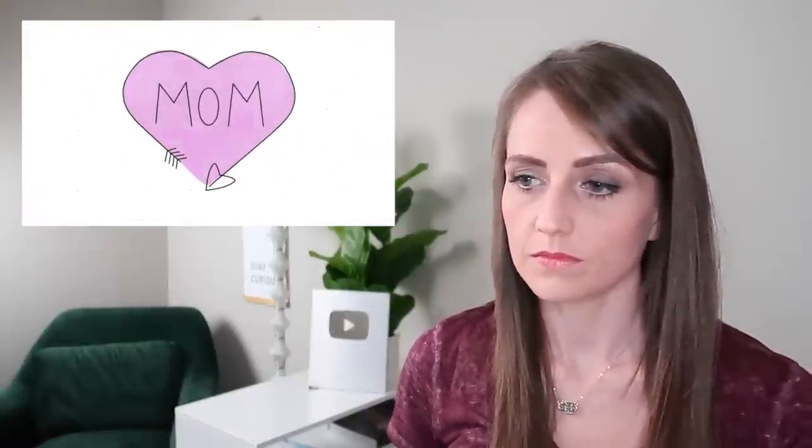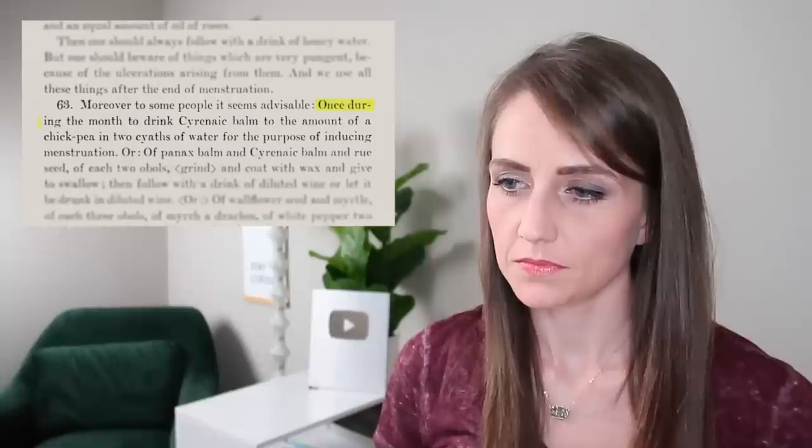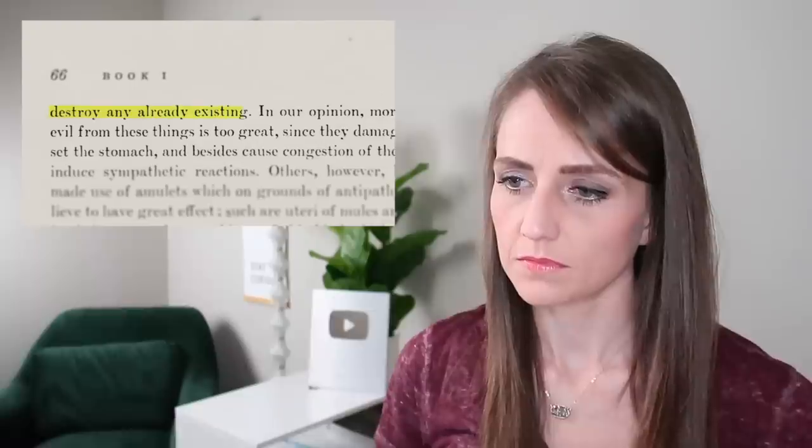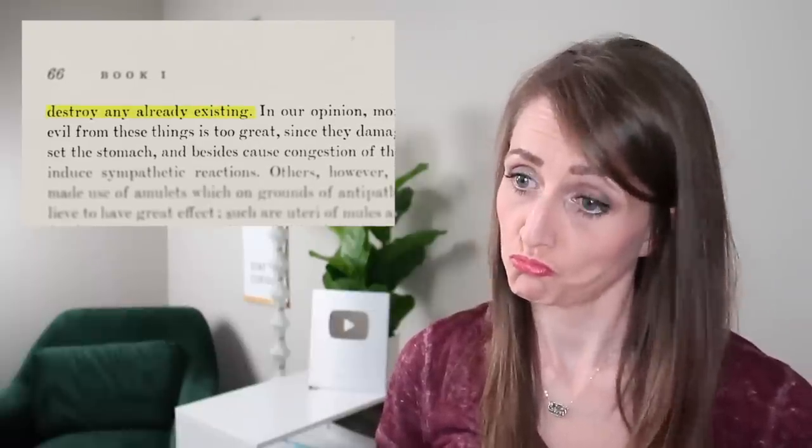We're not sure why this shape became the universal symbol of love. But one leading theory is that it came from the sylphium pod, so valuable across the ancient Mediterranean, it was printed on the currency of the only place they grew. The Greek colony Cyrene advised women to drink sylphium juice once a month, since it not only prevents conception, but also destroys any already existing.